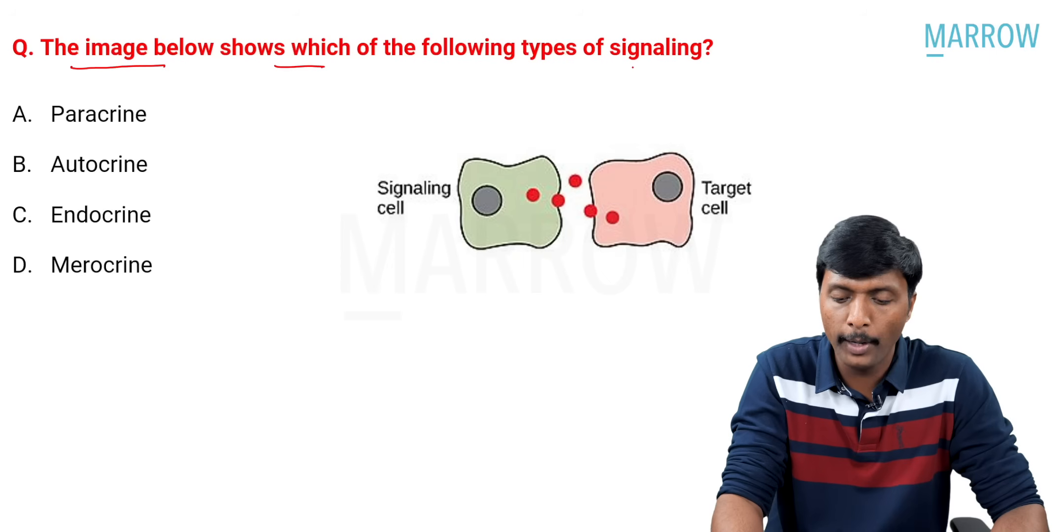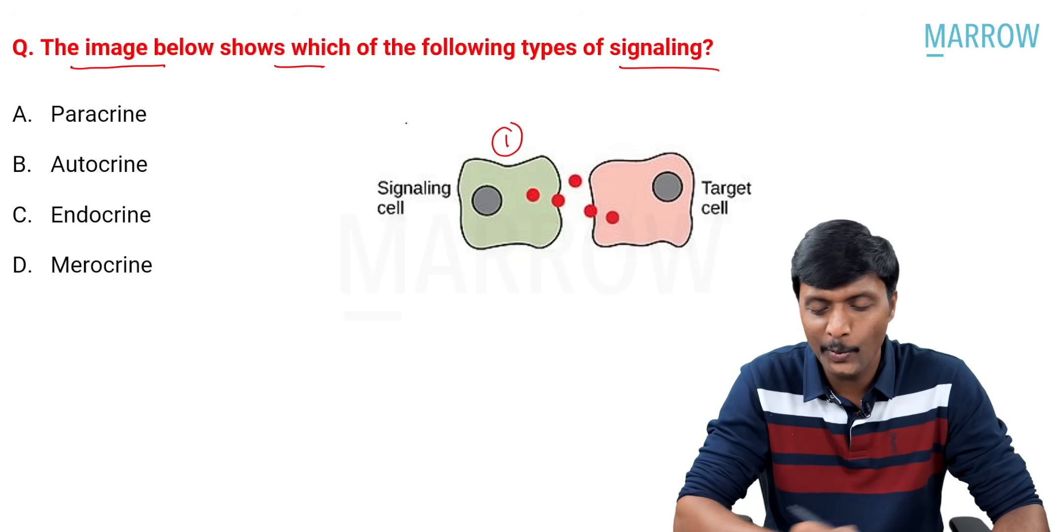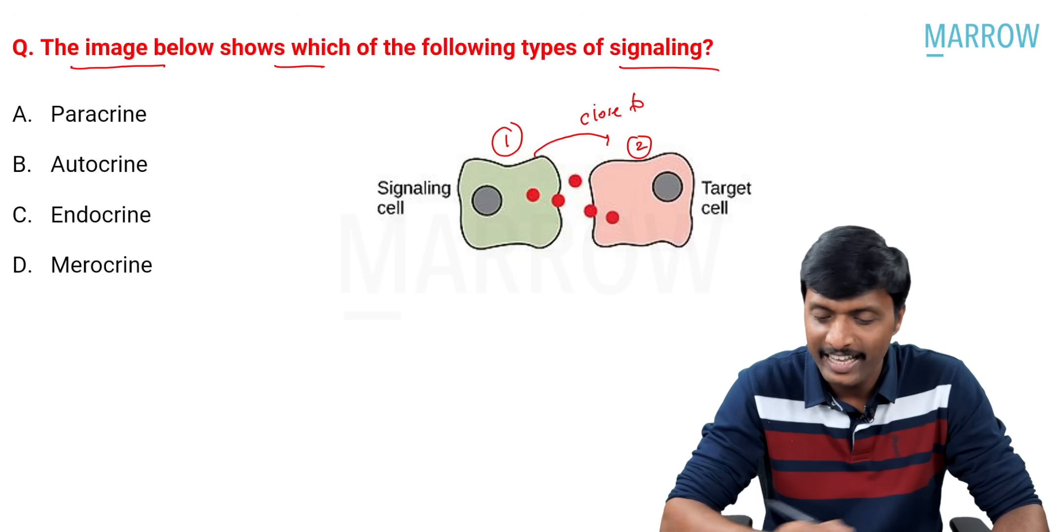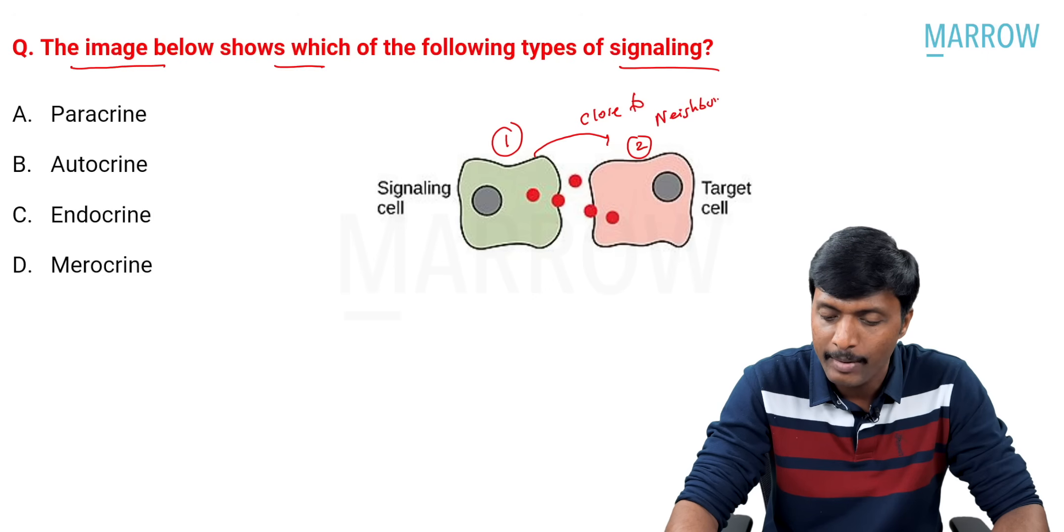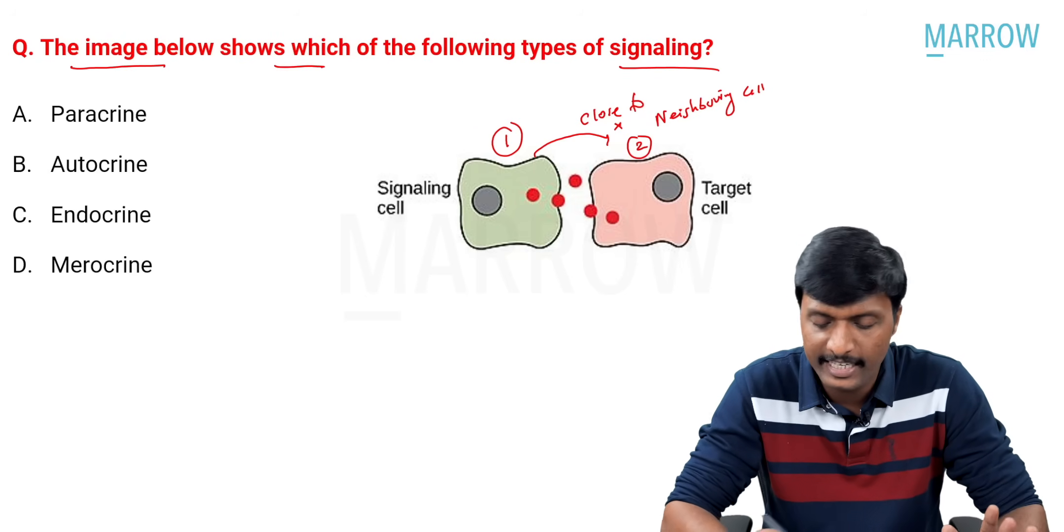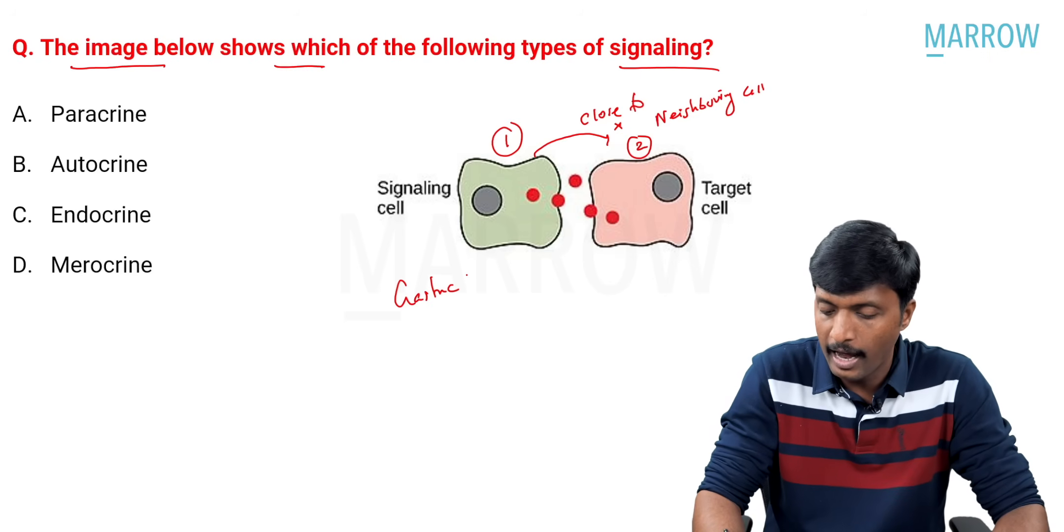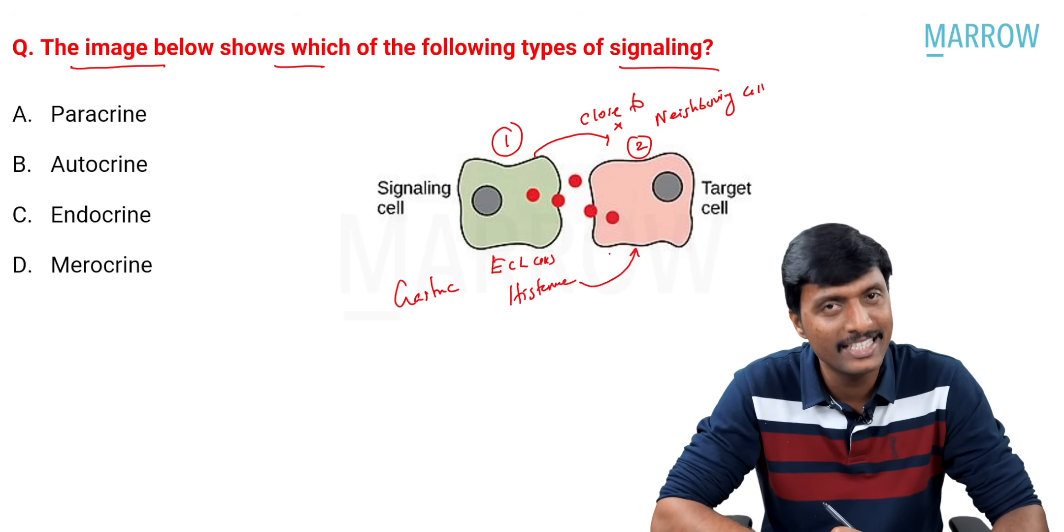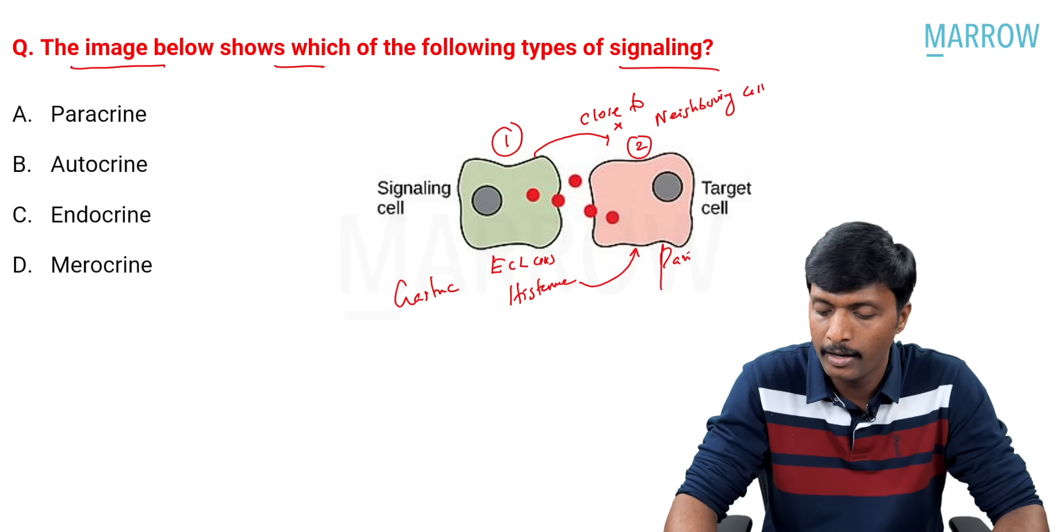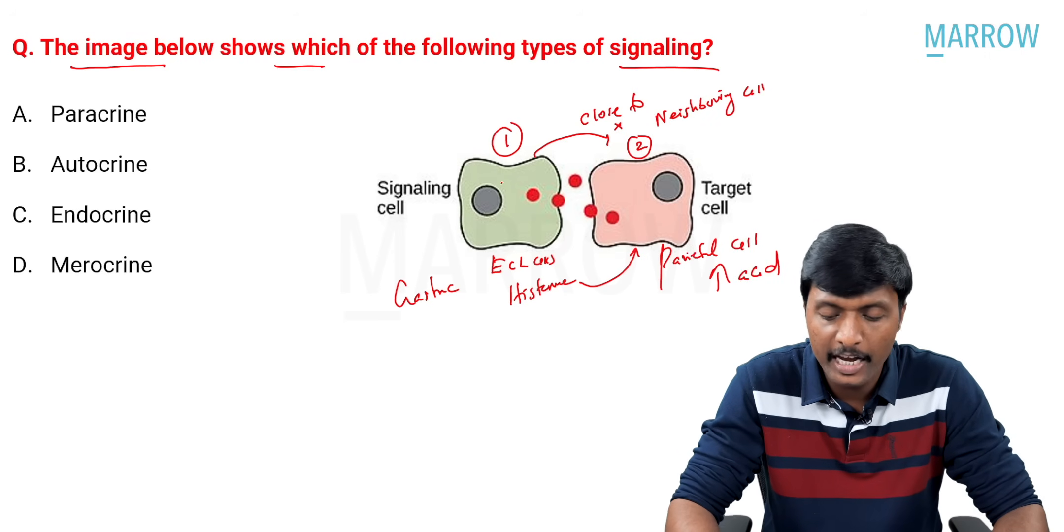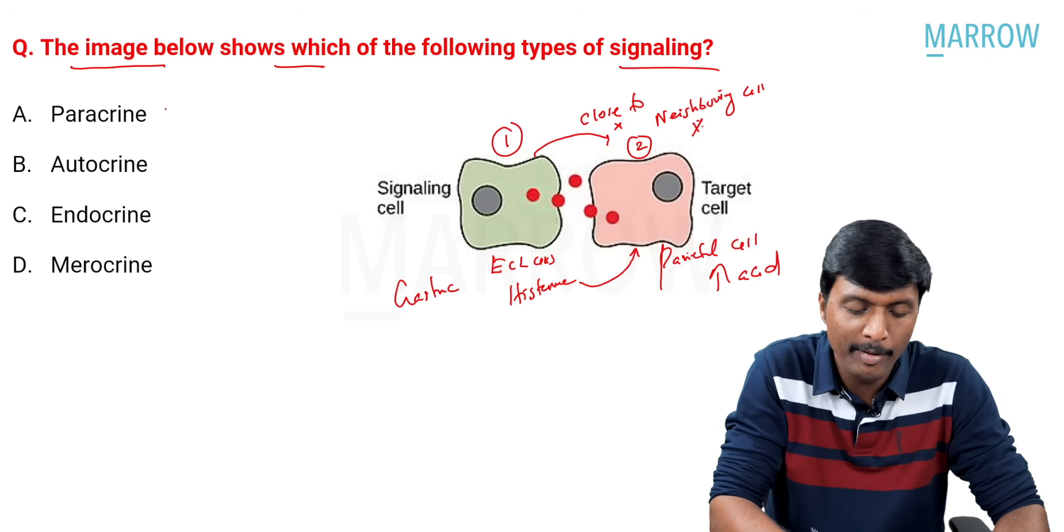The image below shows which of the following types of signaling. One cell is going to influence the second cell which is very, very, very close to. That means, it is going to influence that neighboring cell. A cell is going to influence its nearby neighboring cell. A cell. Classical example seen in the gastric region. Our enterochromaffin-like cells. Histamine. It releases. This histamine will go and influence this nearby cell, neighboring cell, which is our parietal cell to increase acid secretion. A cell influencing its nearby neighboring cell is considered to be paracrine signaling.